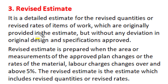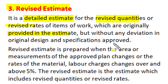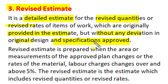In special circumstances, some electrical installation projects have to use revised estimates. These revised estimates are also detailed estimates, but they are for revised quantities or revised rates of items of work which were originally provided in the original detailed estimate. However, this revision of quantity or rates is without any deviation in the original design or the specifications approved in the original detailed estimate. So with the same design and specification, if quantities or rates have any deviation, it will require a revised estimate.